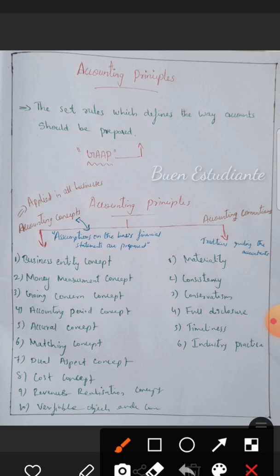The Verifiable Objective Evidence Concept states that every transaction recorded in the accounts must be supported by documentary evidence. This evidence includes receipts, bills, vouchers, and other documents. All recorded transactions should have proper supporting evidence.